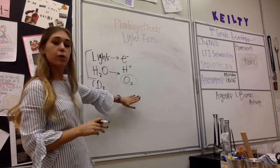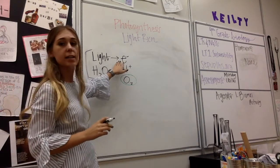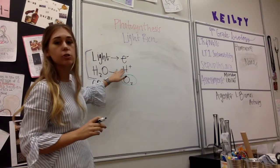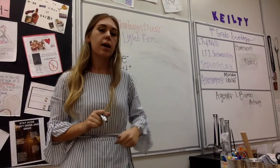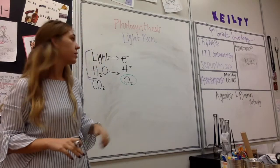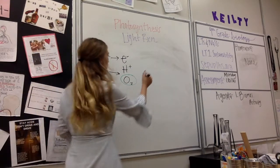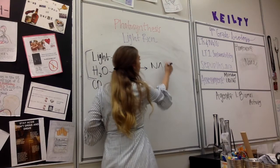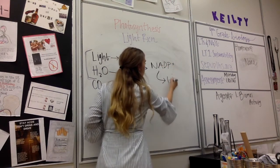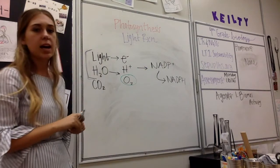After photosystem 2, we move into the electron transport chain. The electron transport chain is going to take our high-energy electrons and our hydrogen ions and transport them inside the thylakoid. After that, we go to photosystem 1. Photosystem 1 uses the electrons and hydrogen ions to turn NADP+ into NADPH, picking up that hydrogen ion.